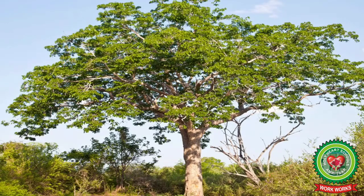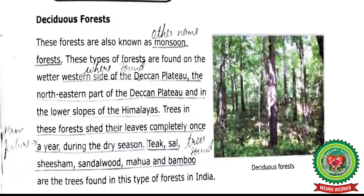Deciduous forests are also known as monsoon forests. These forests are found on the wetter western side of the Deccan Plateau, the northeastern part of the Deccan Plateau, and in the lower slopes of the Himalayas. Trees in these forests shed their leaves completely once a year during the dry season. Teak, Sal, Shisham, Sandalwood, Mahua, and Bamboo are the trees found in these forests in India.